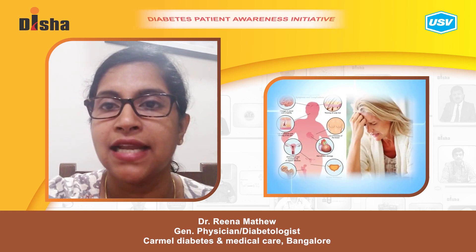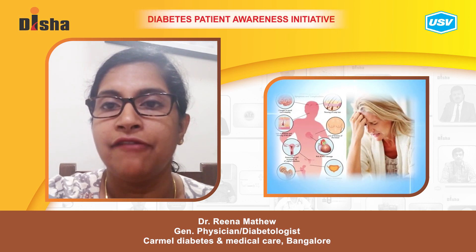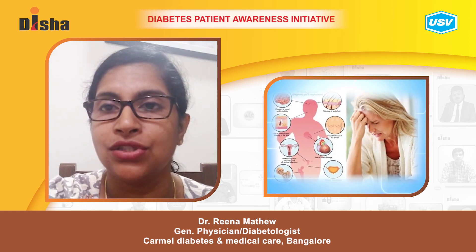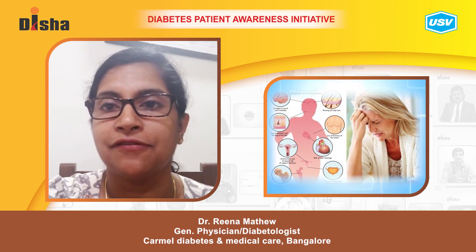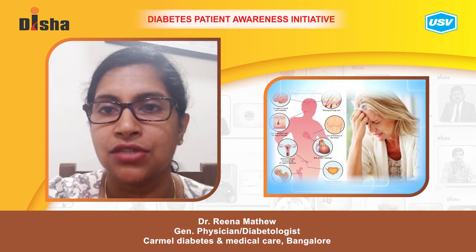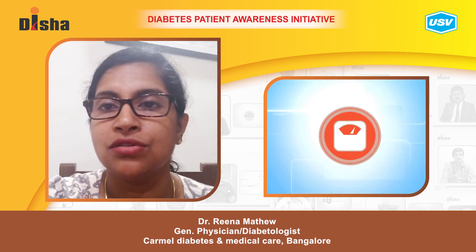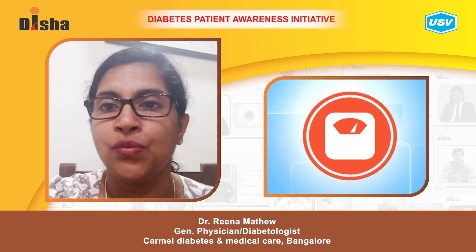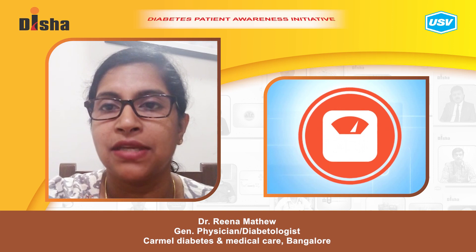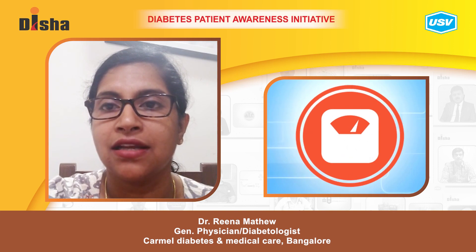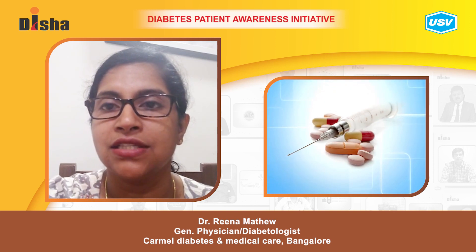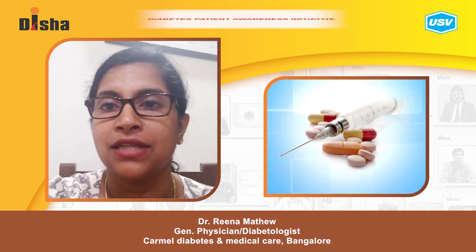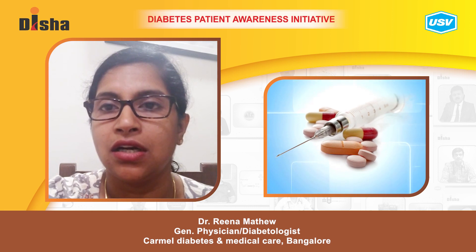Menopause is another phase where women go through a lot of hormonal changes that can affect their blood sugar control. They also tend to gain more weight during this period, which can cause a lot of changes in their medication requirements and blood sugar control.